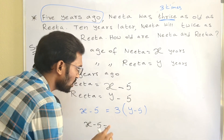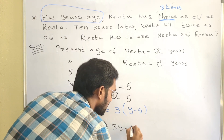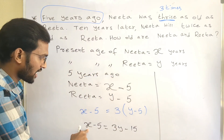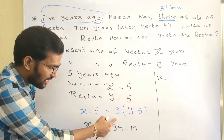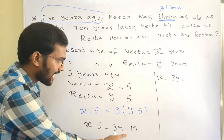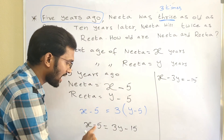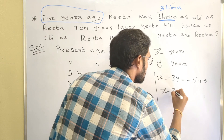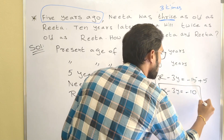Simplifying: X minus 5 equals 3 into (Y minus 5), which gives 3Y minus 15. Taking all variables to one side and constants to the other: X minus 3Y equals minus 15 plus 5, that is minus 10. This is Equation 1: X minus 3Y equals minus 10.